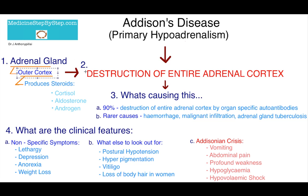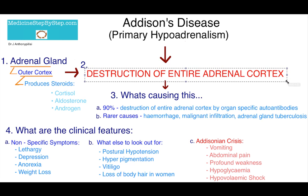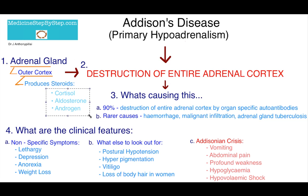So in Addison's disease, there's the destruction of the entire adrenal cortex. And so you have the loss of cortisol, aldosterone, and androgen production. That's what's happening in Addison's disease — the destruction of the entire adrenal cortex and the loss of these hormones.